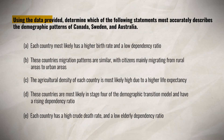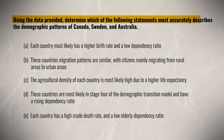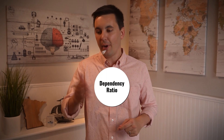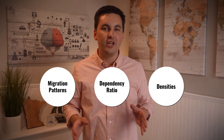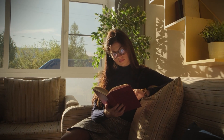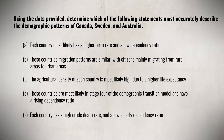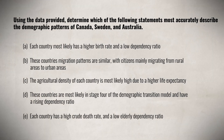Sometimes you might see a straightforward question about this model, such as asking you to identify a characteristic of one of the stages. But you might also see a more difficult question, such as one that has you apply your knowledge to data. For instance: using the data provided, determine which of the following statements most accurately describes the demographic patterns of Canada, Sweden, and Australia. To fully break this question down, you need to know about dependency ratios, migration patterns, densities, and have an understanding of the demographic transition model. All of the concepts in this unit connect and build off one another, so oftentimes test questions connect them. If you need more time to answer the question, just pause the video.